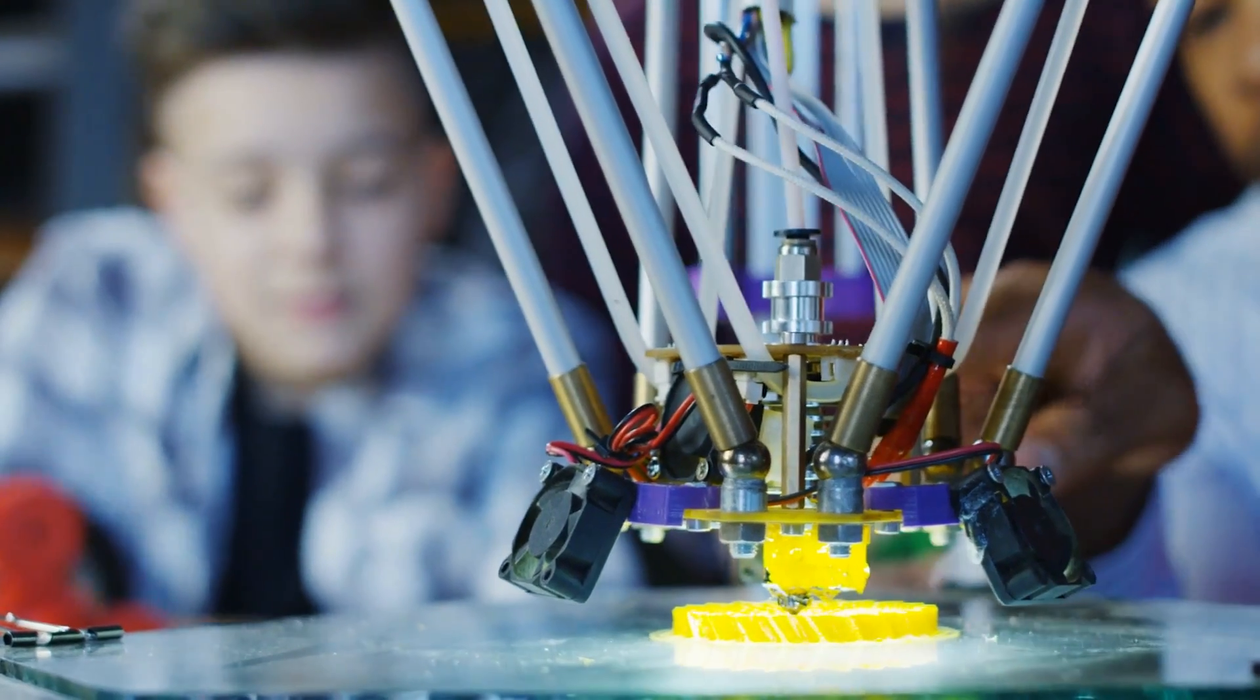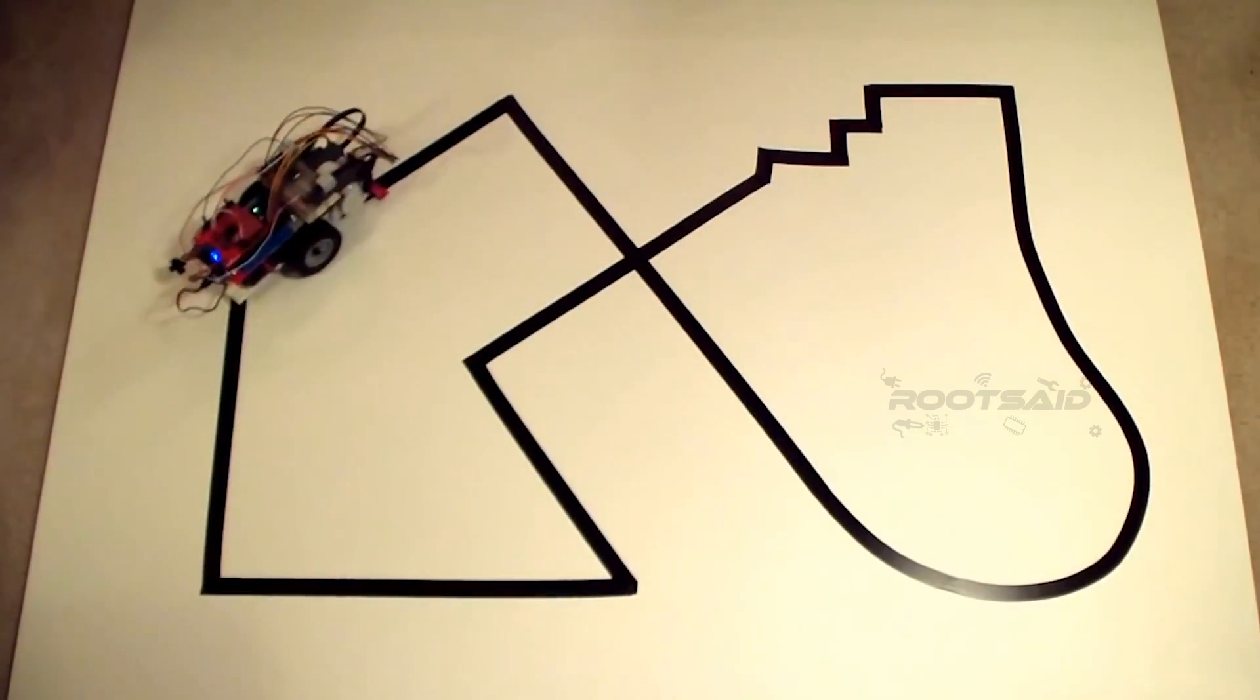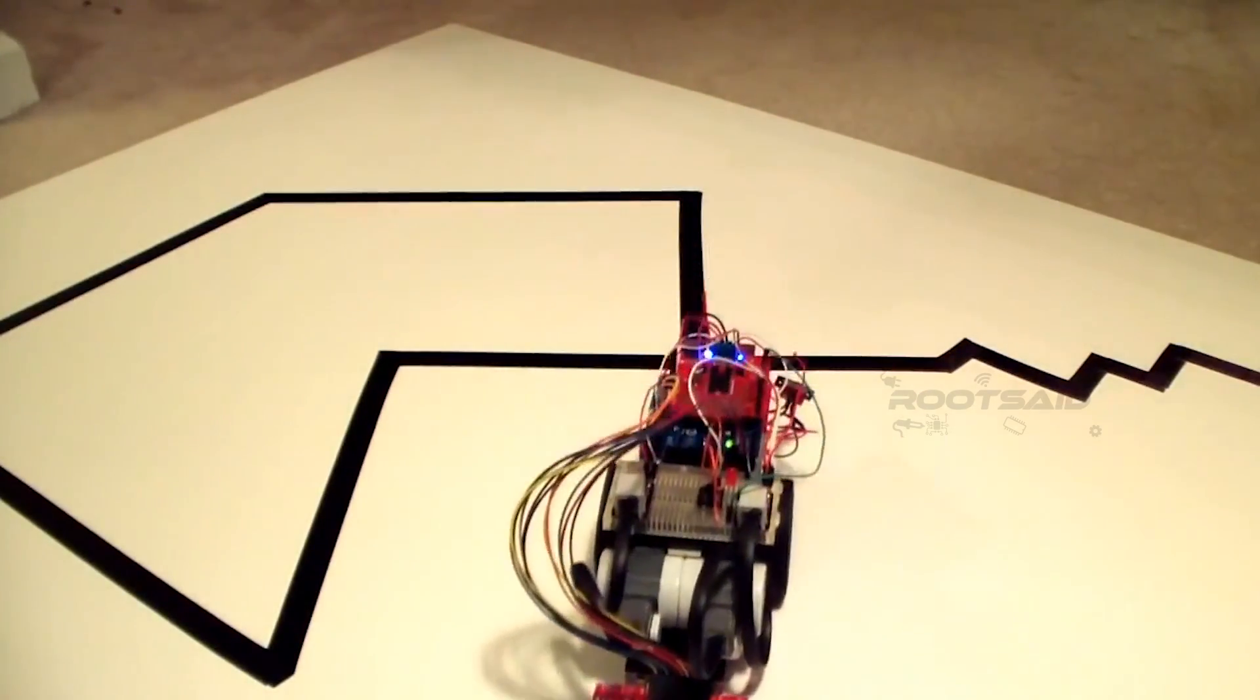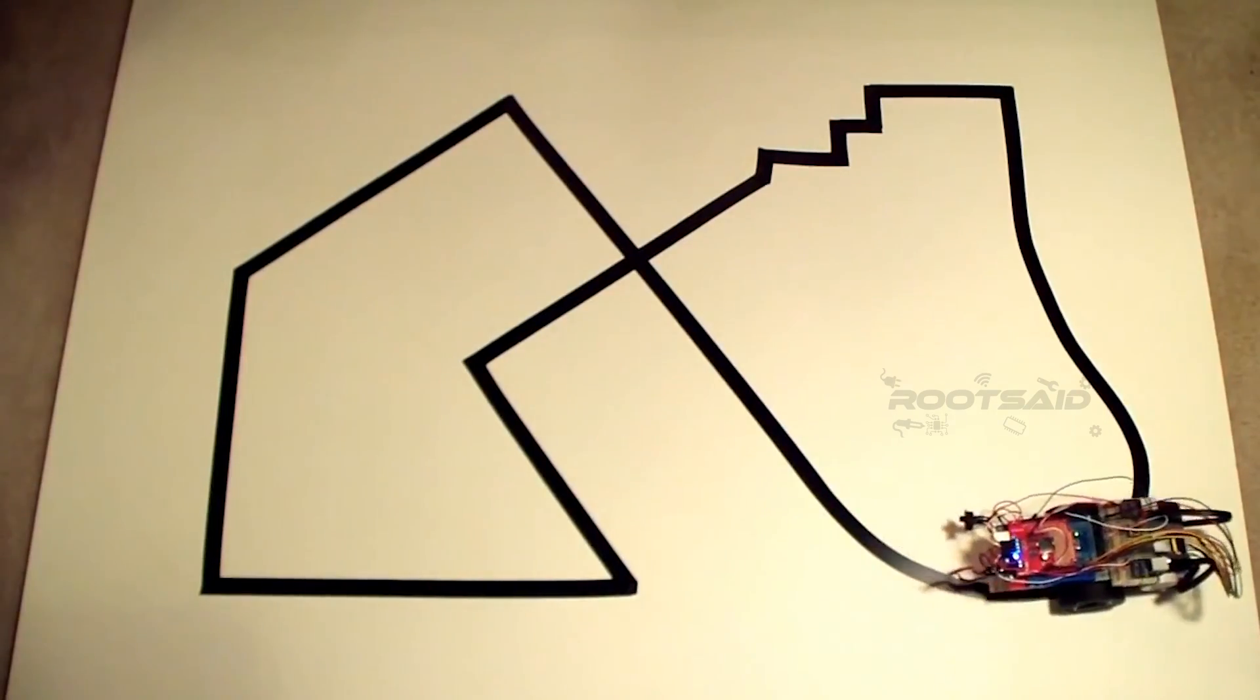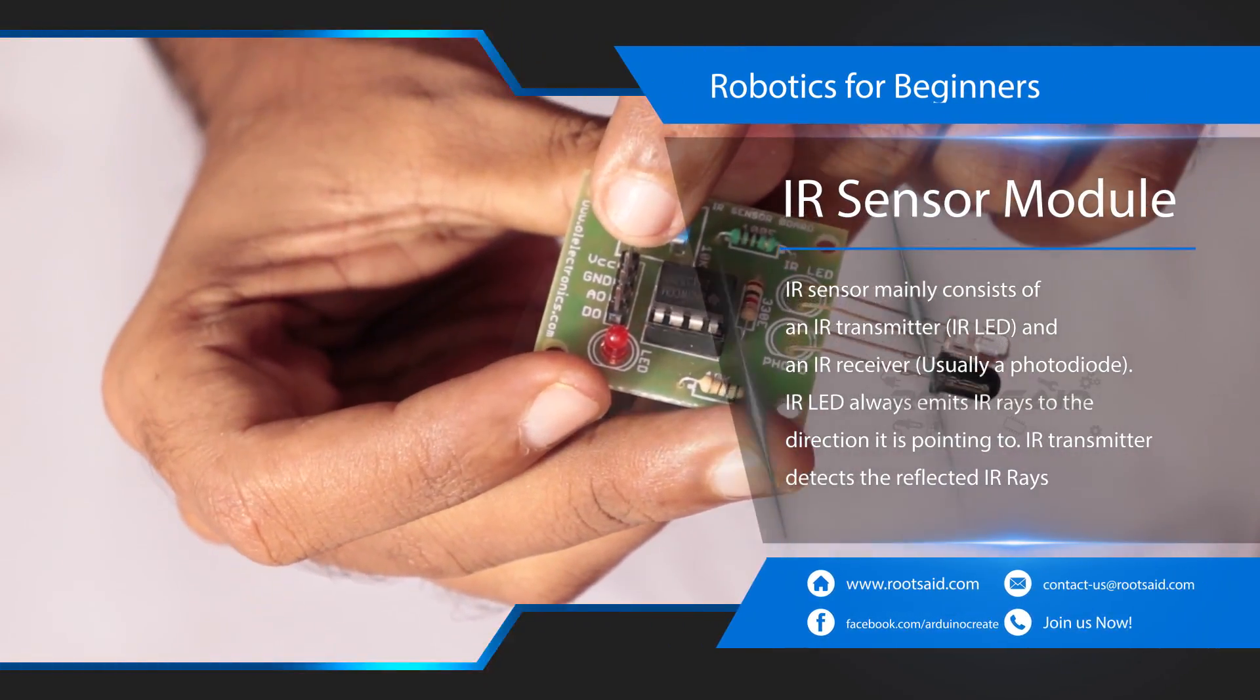Now, as usual, an example. Consider this line following robot using Arduino. This robot uses IR sensor to detect the track and use motors to move around depending upon the color of the track. Here, IR sensor is the sensor that senses the environment and gathers input.